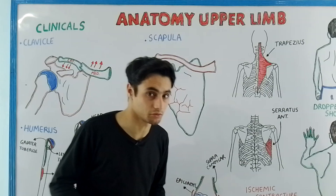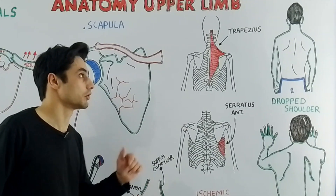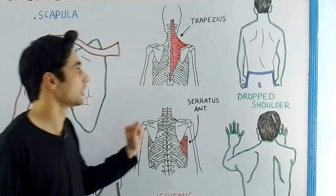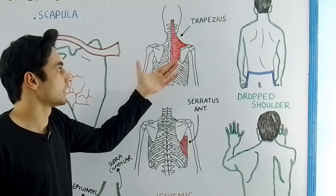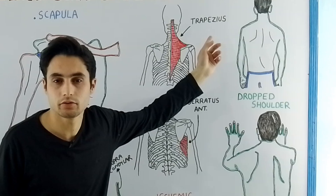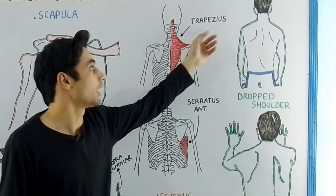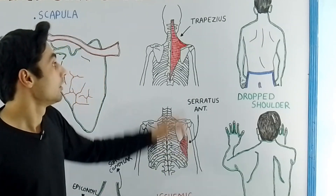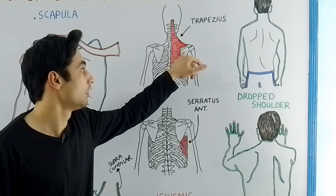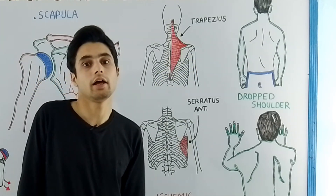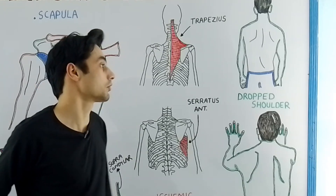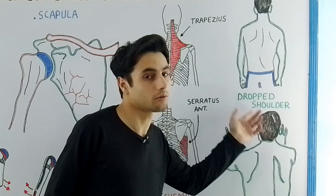Two important muscles are attached to the scapula bone: the trapezius muscle and the serratus anterior muscle. The trapezius muscle maintains the normal position of the scapula. If the trapezius muscle is paralyzed or its nerve supply is damaged, the scapula on the paralyzed side will drop, resulting in a drop shoulder or uneven shoulder.